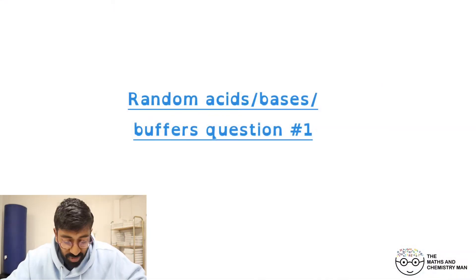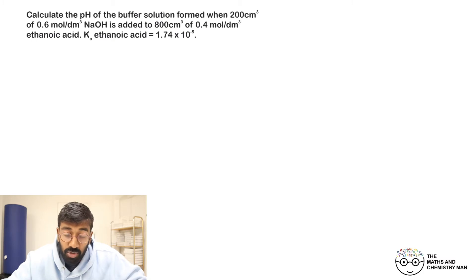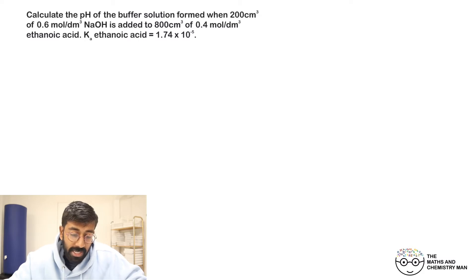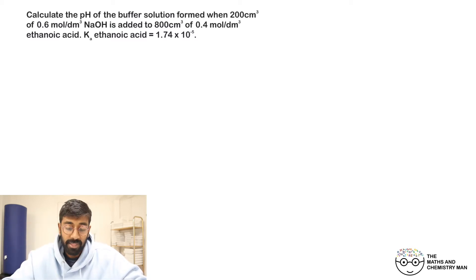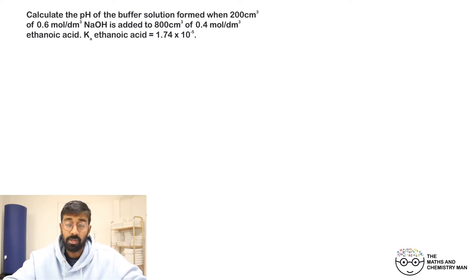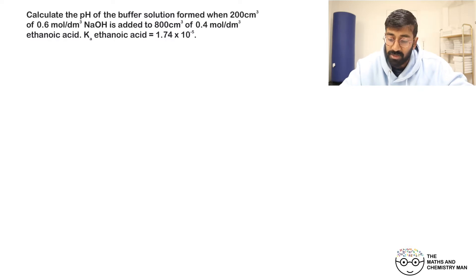It's time for a chemistry question on buffers. We've got to calculate the pH of the buffer solution formed when 200 cm³ of 0.6 mol dm⁻³ NaOH is added to 800 cm³ of 0.4 mol dm⁻³ ethanoic acid, with a Ka for ethanoic acid given. Lots of numbers — you'll need a few formulas, so jot this all down and have a go before we go through the solution.